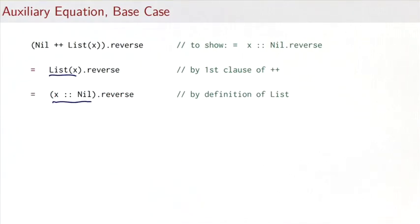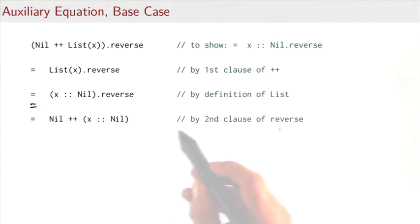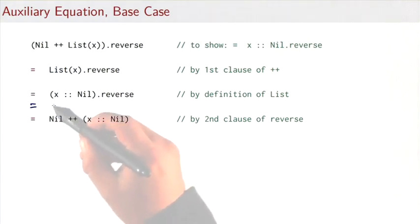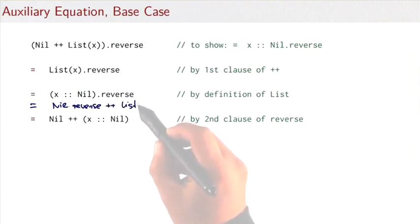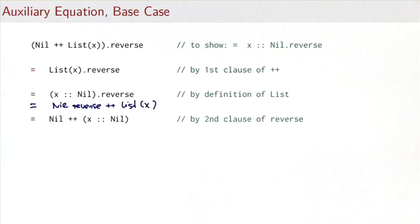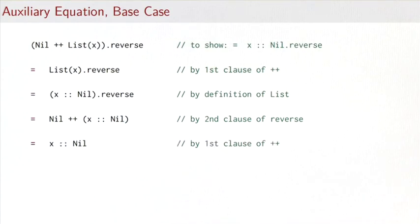Next, we invoke the second clause of reverse. There's one intermediate step: by the second clause of reverse, we get nil.reverse followed by list of x. Then nil.reverse simplifies by the first clause of reverse to nil, and list of x expands to x followed by nil.